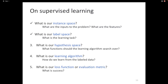Instance spaces can be anything — emails, images, stocks, portfolios. The label space typically represents the type of learning problem. If you have two things in the label space, we call it a binary classification problem — typically plus/minus, zero/one, true/false. If you have a countable finite number of things, it's a multi-class classification problem. If the label space is the set of all real numbers, we call it a regression problem.